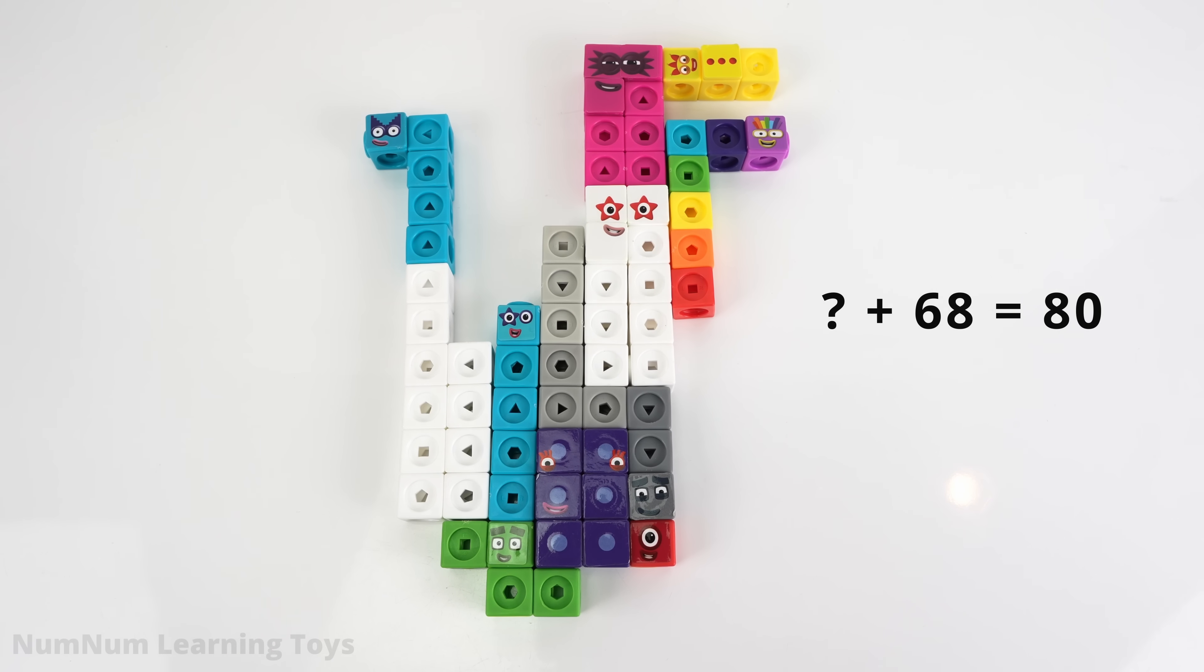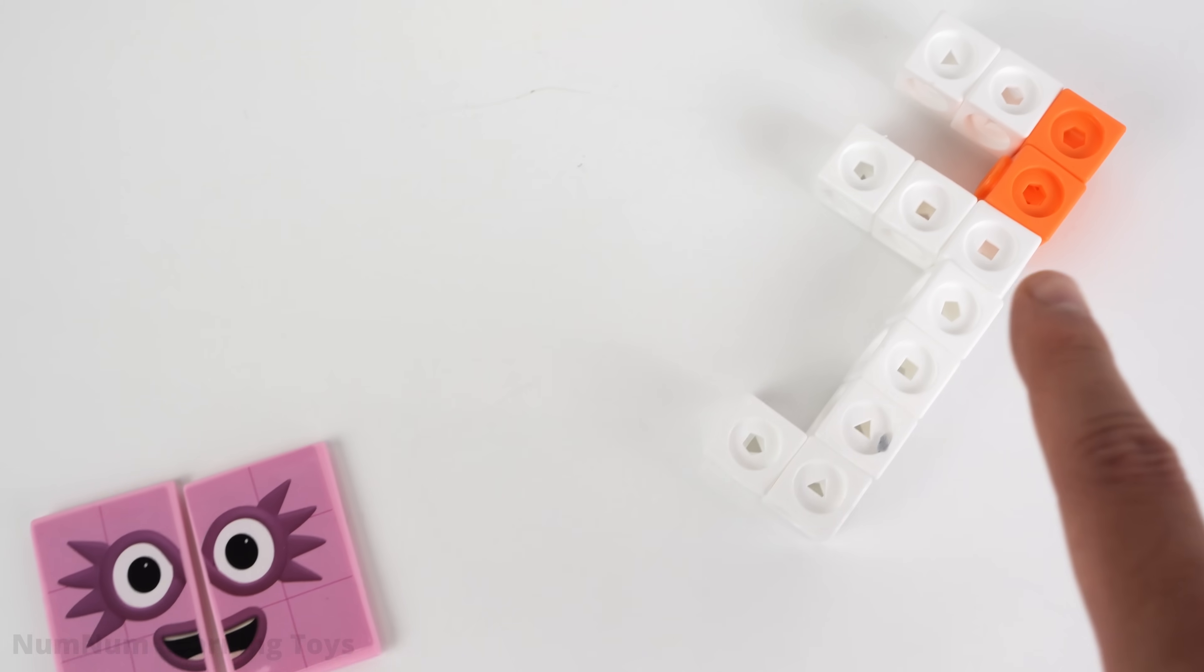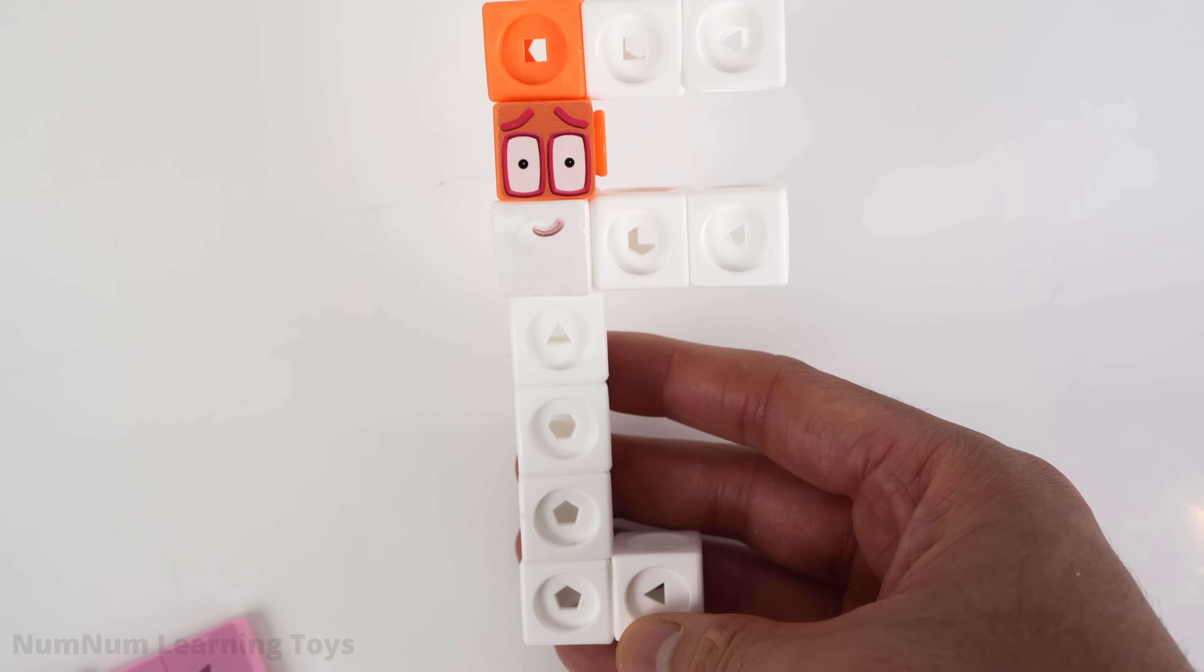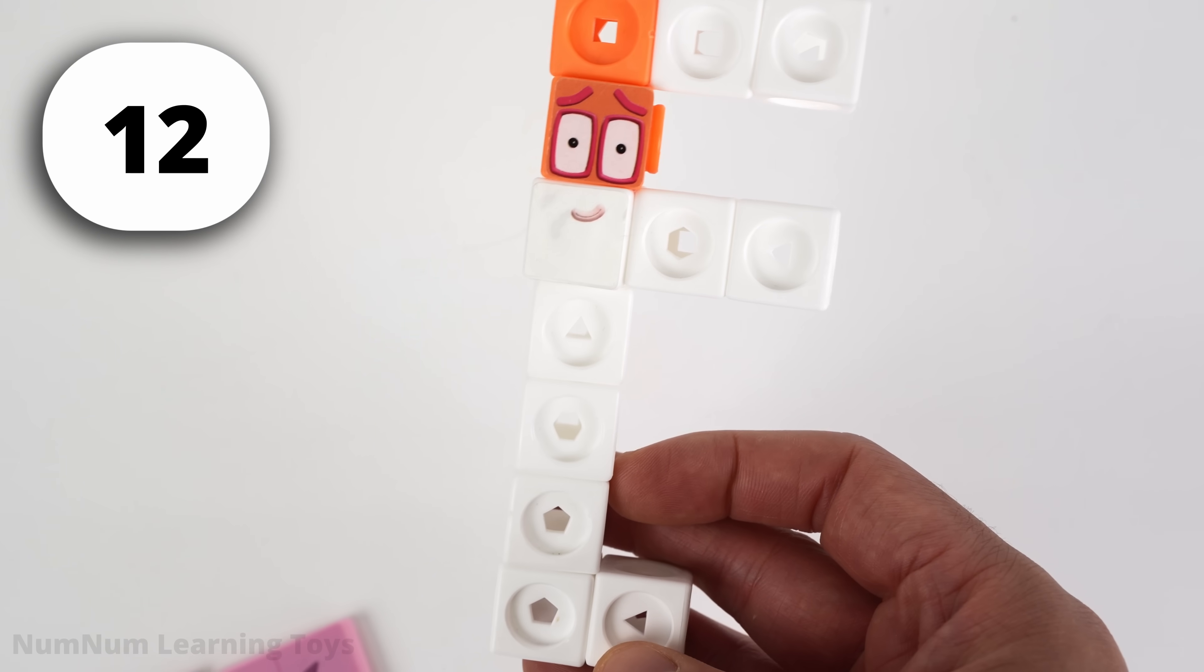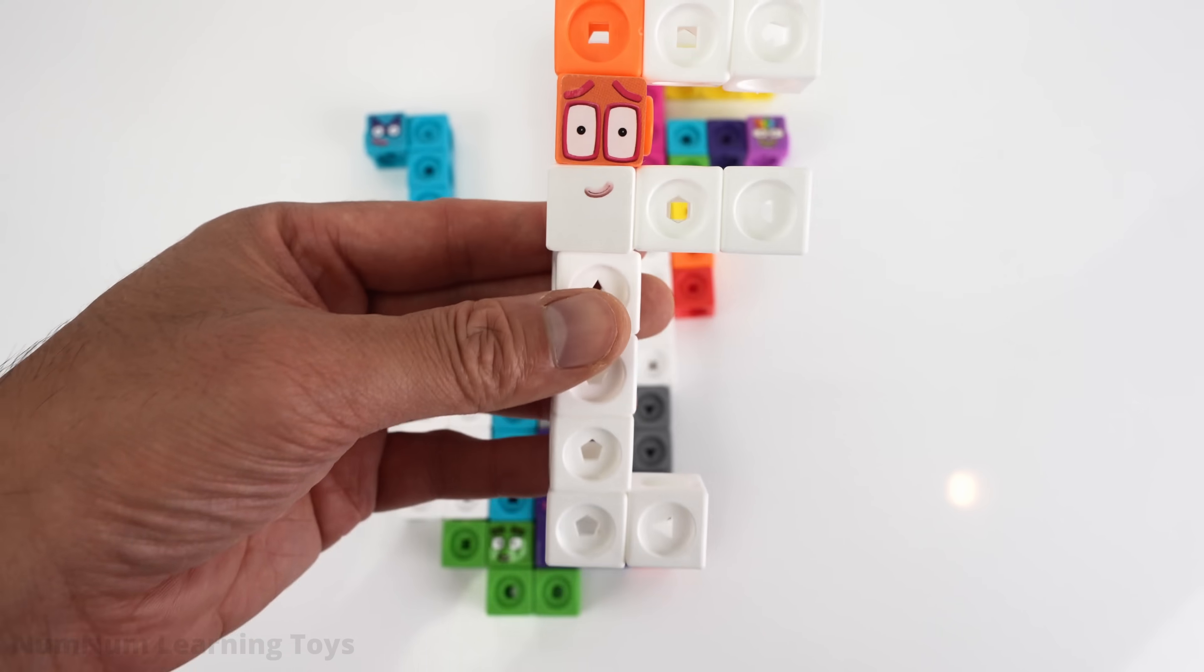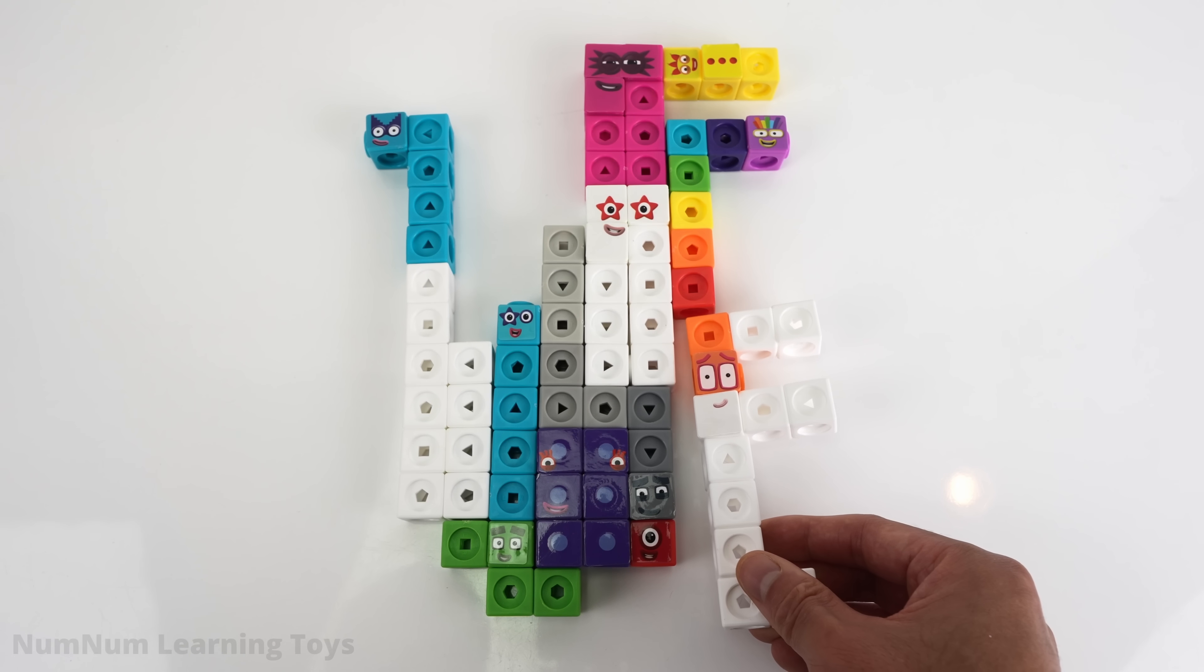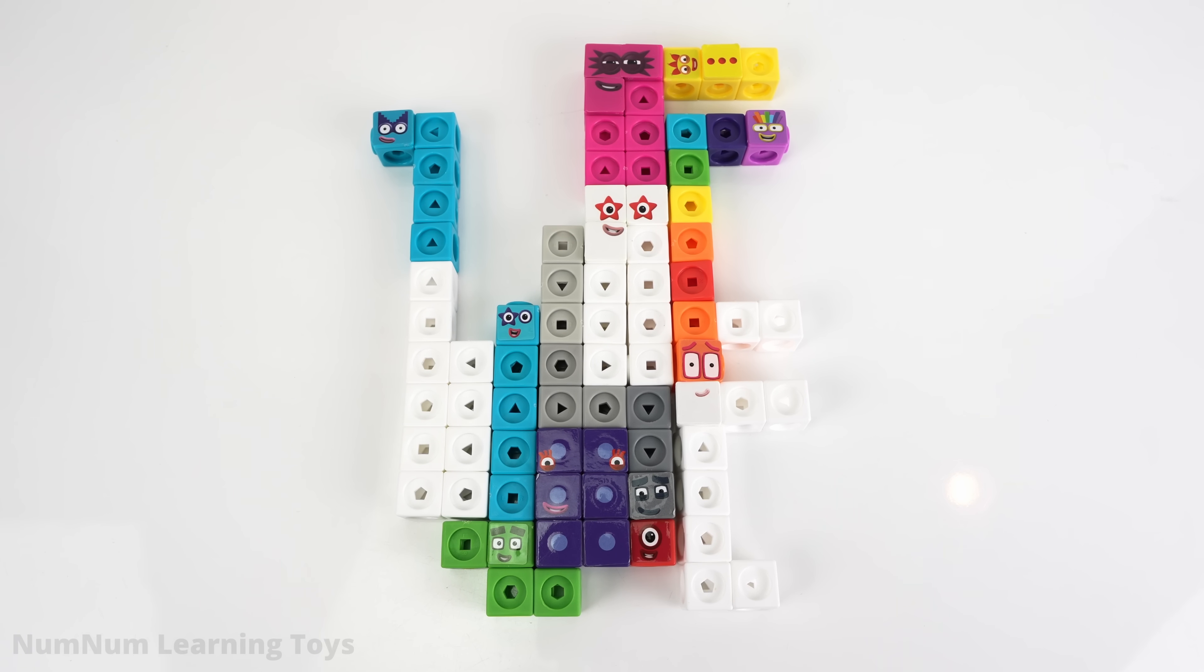Can you guess how many more we need to get to 80? This big number will help us. Do you know this number? There are 2 orange blocks and 10 white blocks. It's 12! The shape of this 12 reminds me of the letter F! 12 plus 68 equals 80!